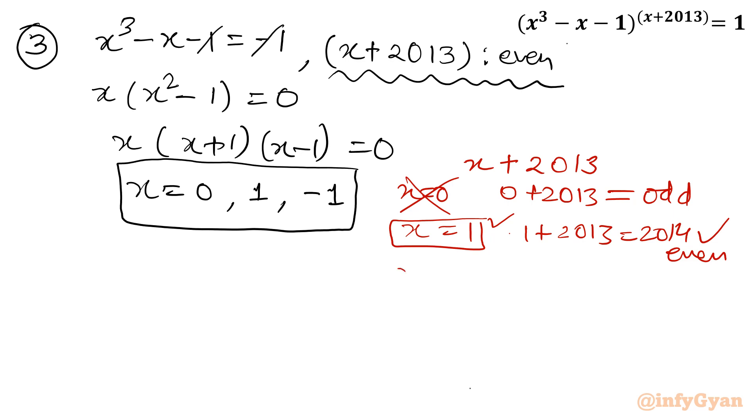We can verify also. Minus 1, minus 1 plus 2013, 2012, even, accepted. So these two solutions are accepted, only x equal to 0 out of solutions so far is rejected.